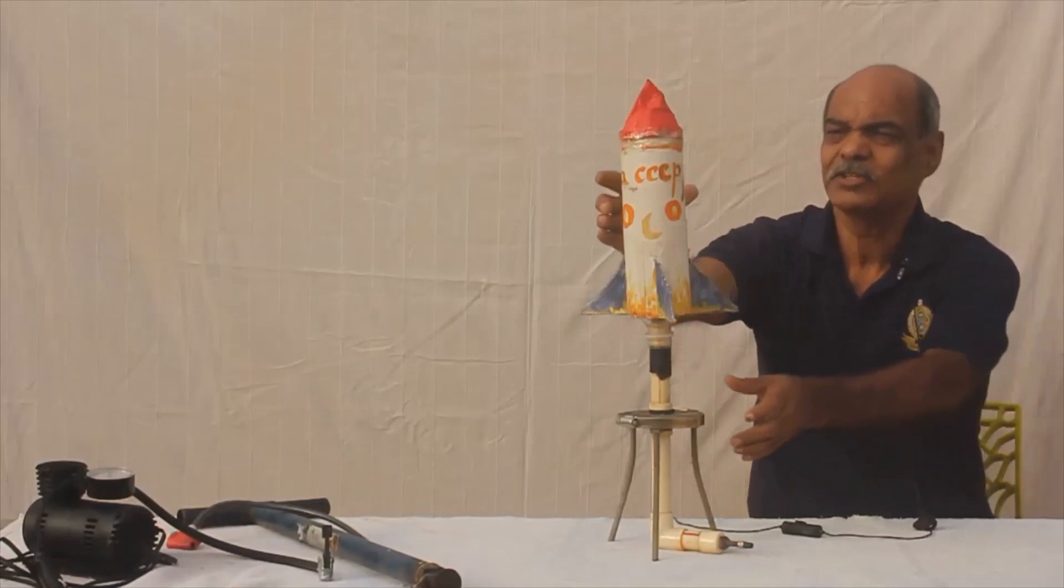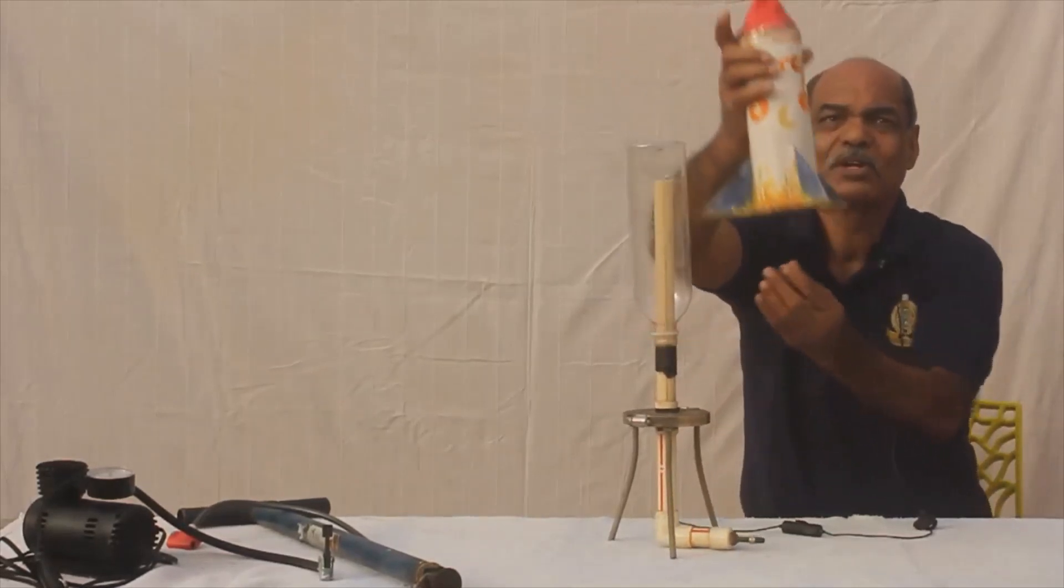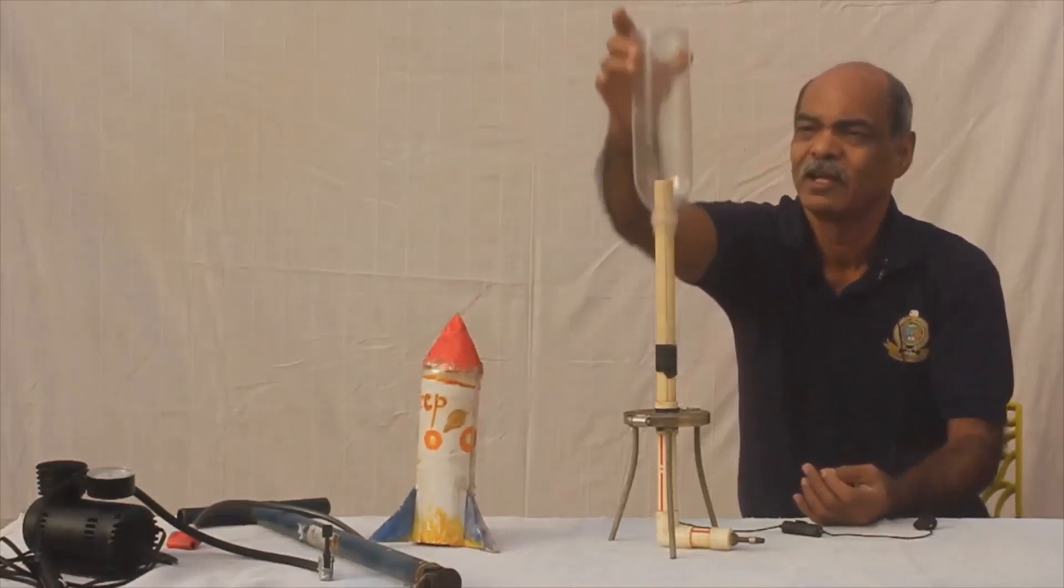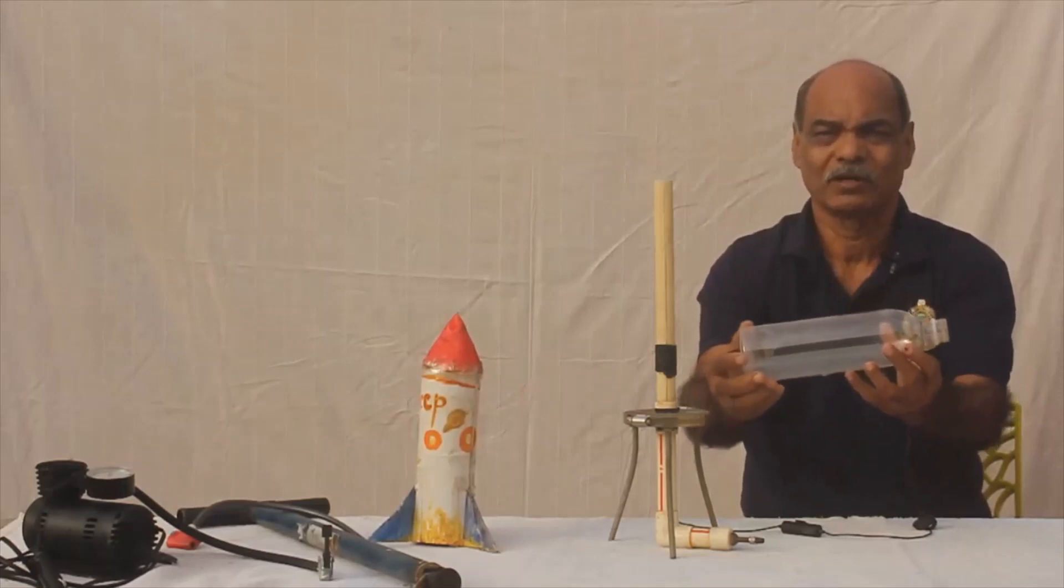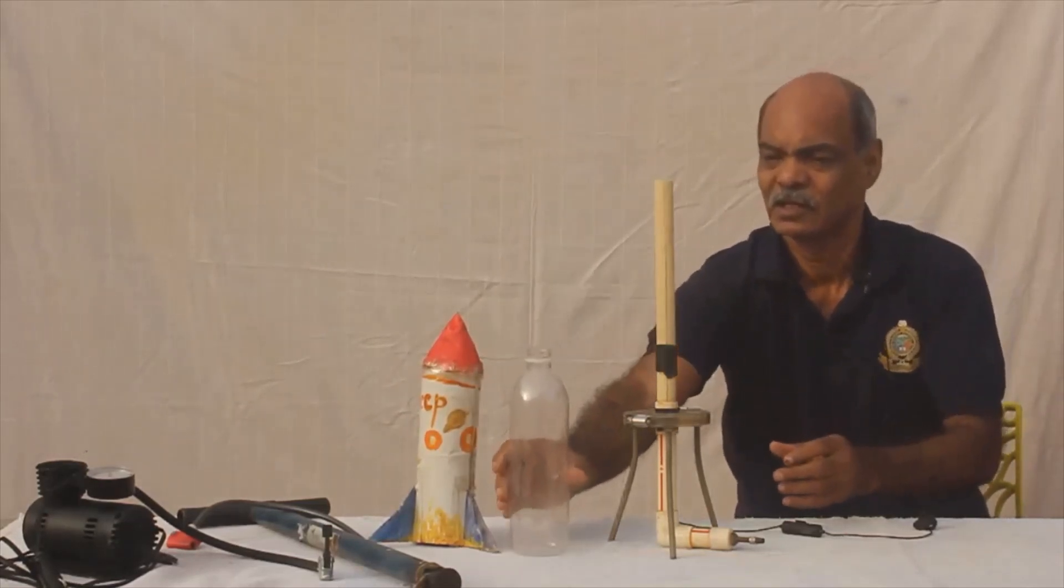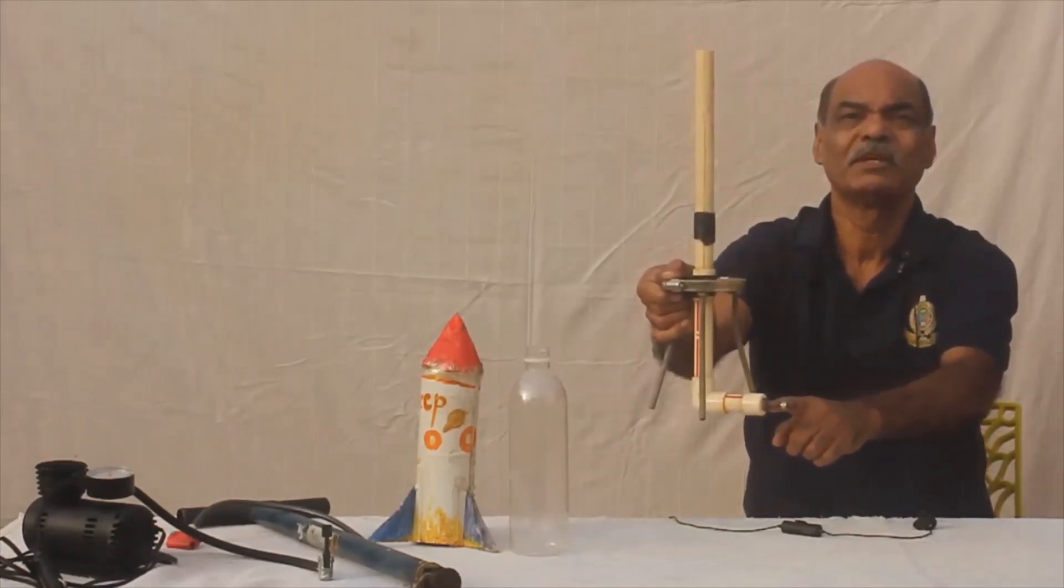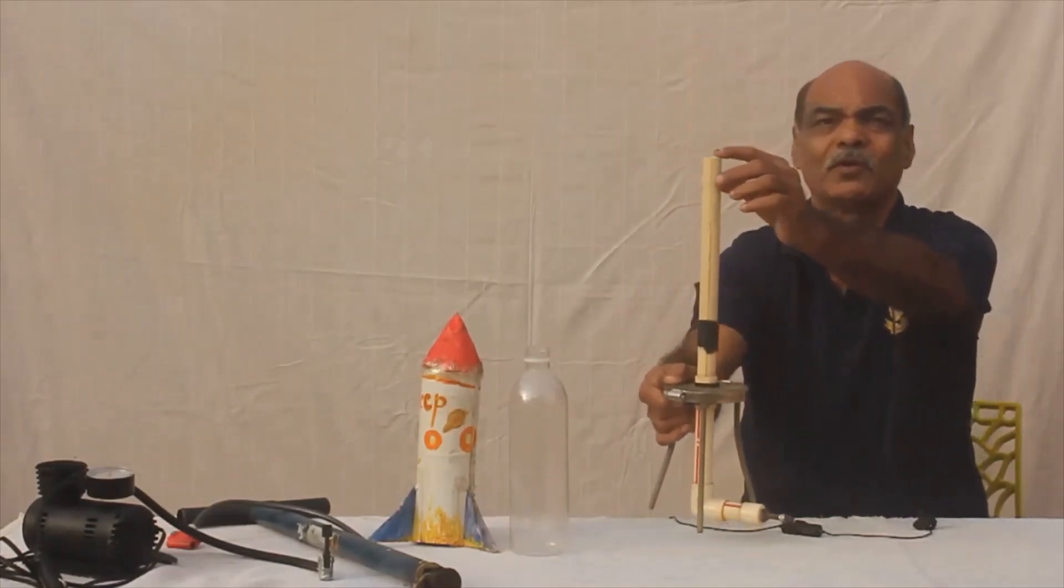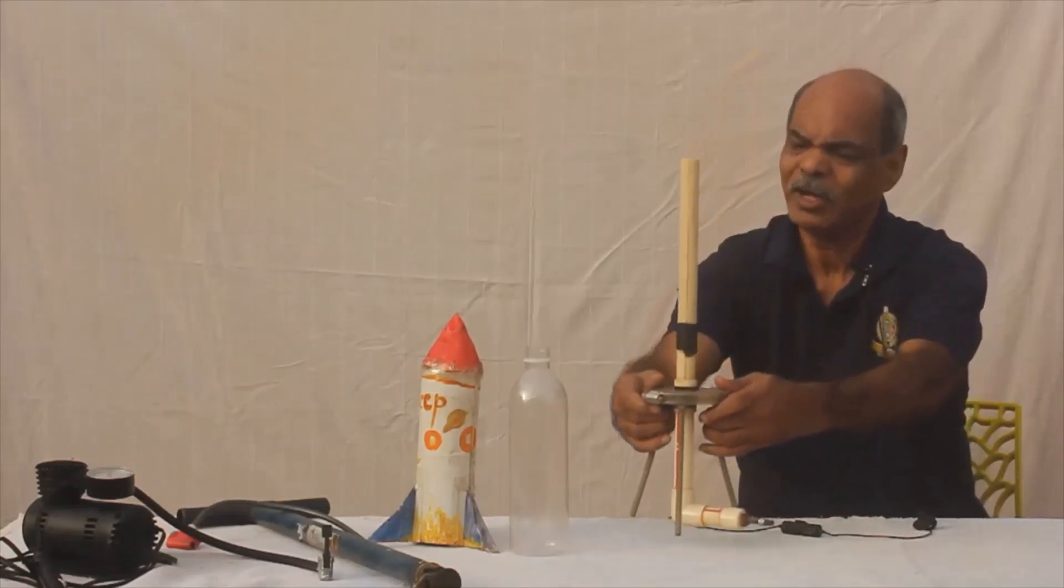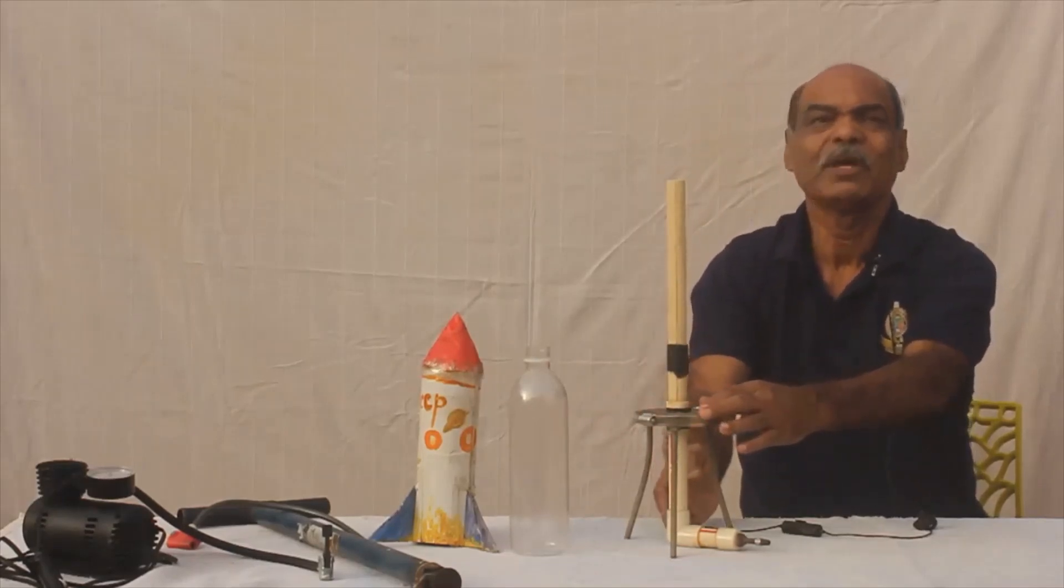This rocket consists of a paper shell in the shape of a rocket, a plastic bottle of a cold drink or mineral water, an L-shaped PVC pipe approximately three-fourths of an inch in diameter, and a tripod or any other base to support it to keep the pipe erect.